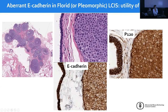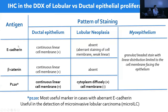Always be aware that if there is no gland formation in a solid intraductal carcinoma, you should always think about these special variants of lobular neoplasia. P120 is the most useful marker because it stains either the membrane or the cytoplasm, and it can also be useful for detection of microinvasive lobular carcinoma.